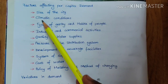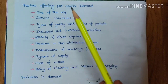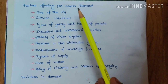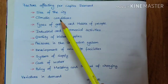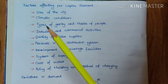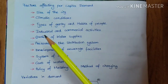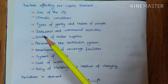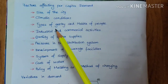The first factor is the size of the city — based on the size, water demand will vary, and in greater cities demand will be more. The next is climatic conditions: in very hot and very cold areas water is used more, because in very cold areas, if water is not used regularly, freezing happens inside the pipes, so they often open the pipes to regulate water flow.